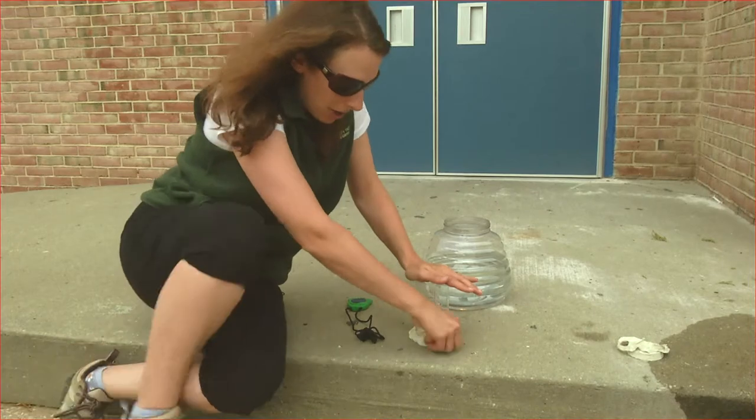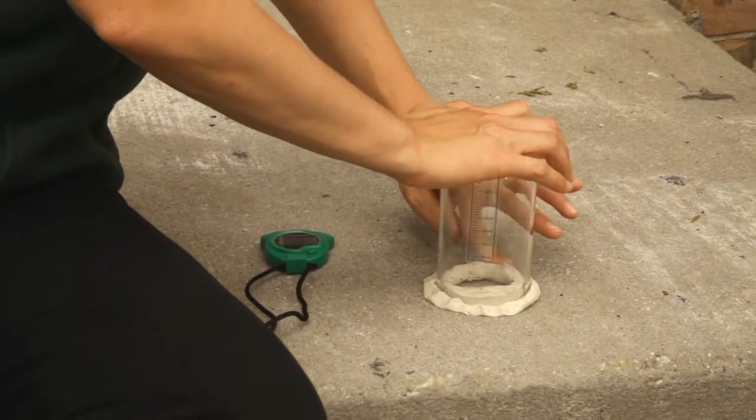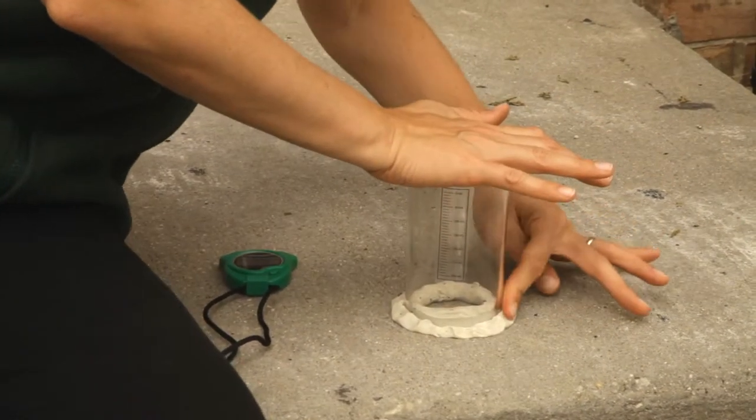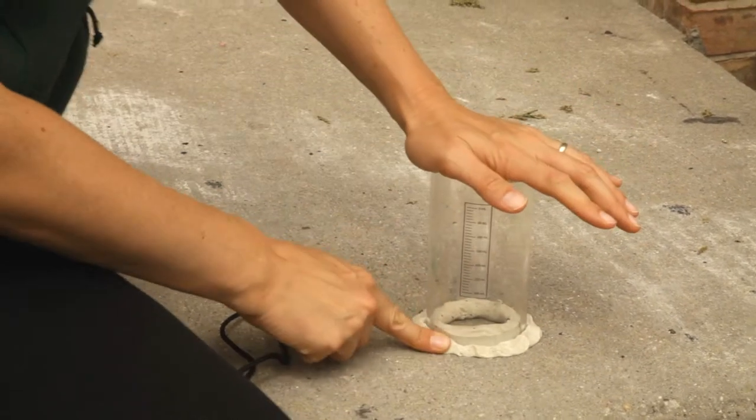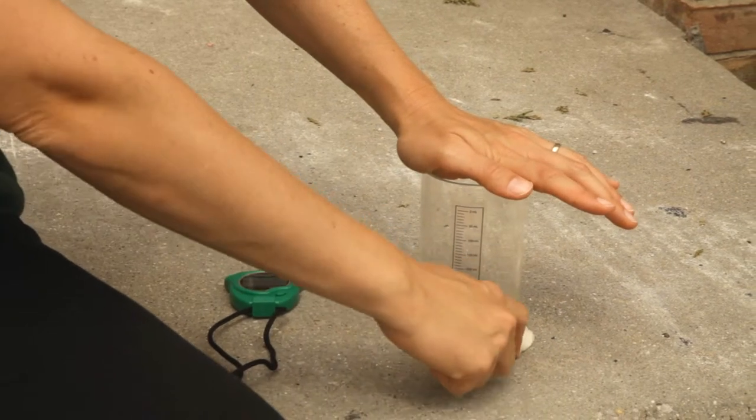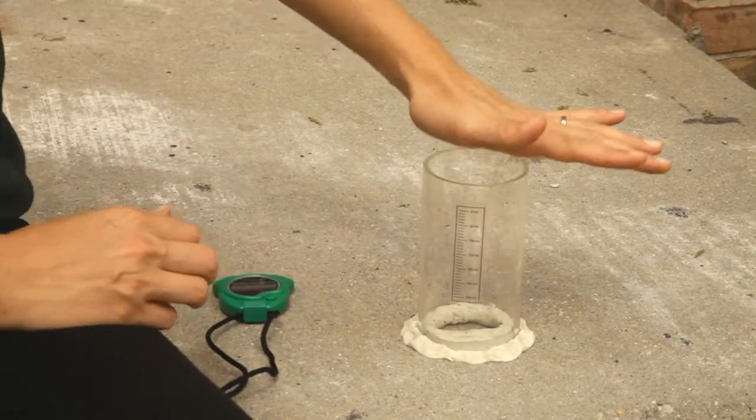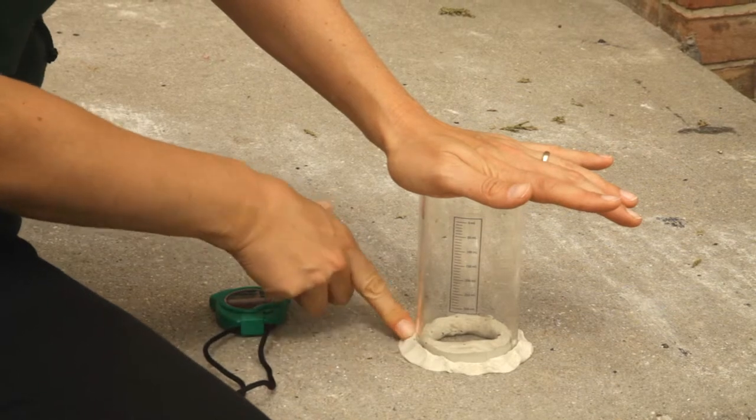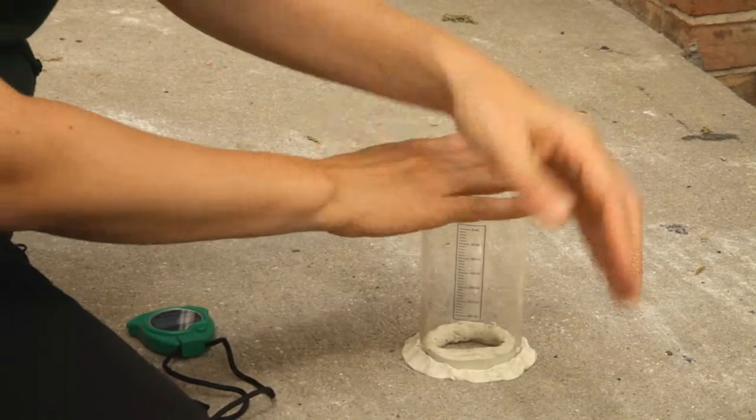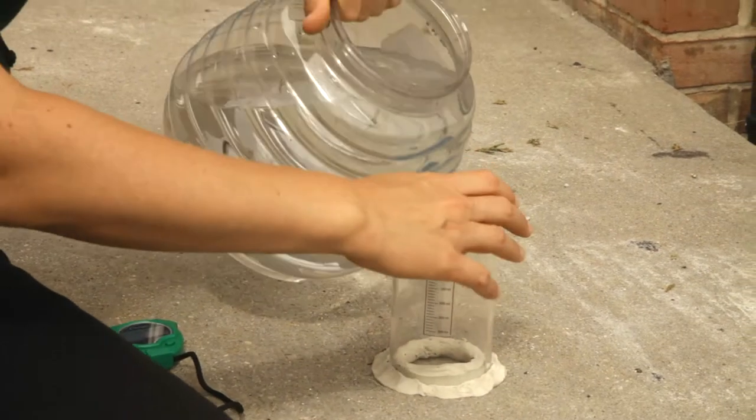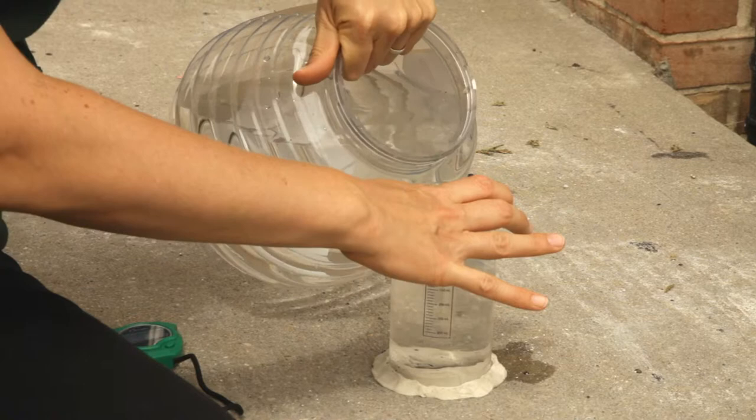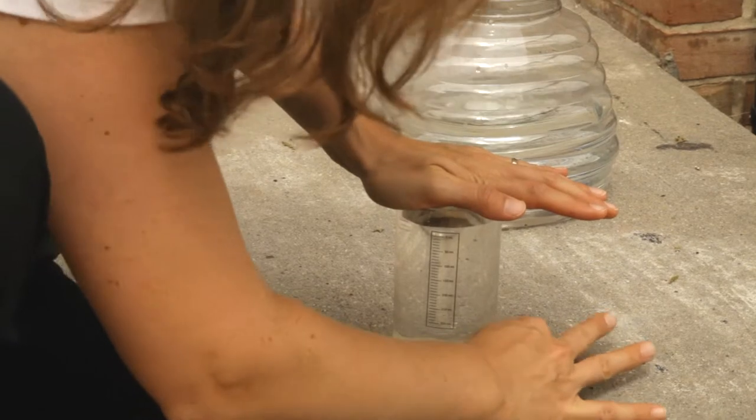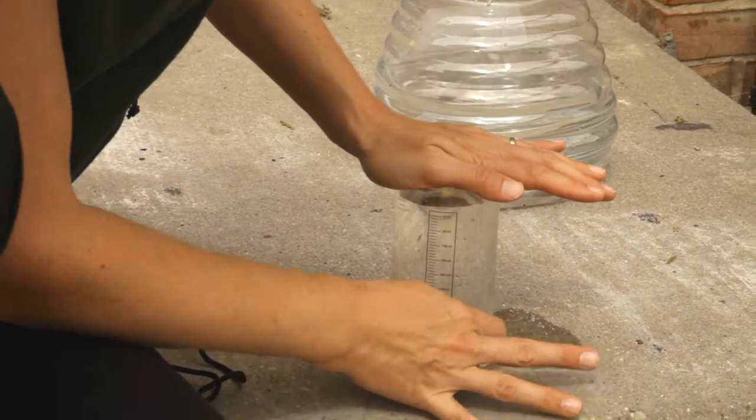Then you want to pour a little bit of water in just to make sure nothing is coming out of the bottom of your clay seal. Usually it helps to keep a hand on top. A little bit of pressure helps keep that seal together while you're doing this activity. If any leaks occur, you can fix them before you start collecting your data.